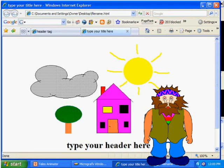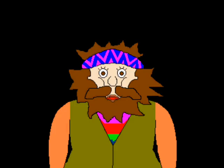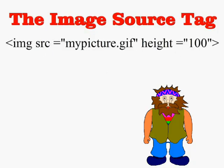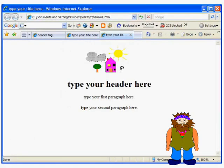Our picture looks a little too big, doesn't it? So we will make a slight modification to our image source tag. We will start with our original image source tag, and at the end we will add in the word height, followed by the equals sign, and the number of pixels high you want it to be, with that number between quotation marks. For demonstration purposes I will use 100 pixels. Save it, and when we open it up in the browser, we see that our web page looks like this. And that is much better, isn't it?